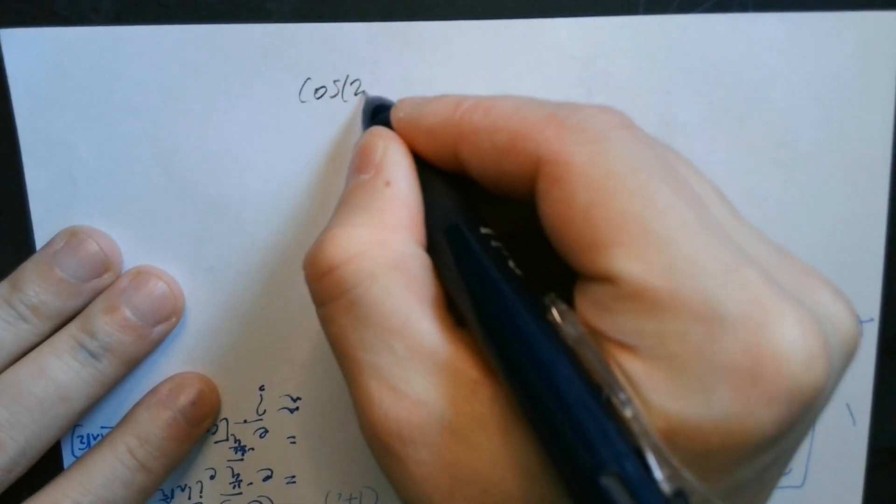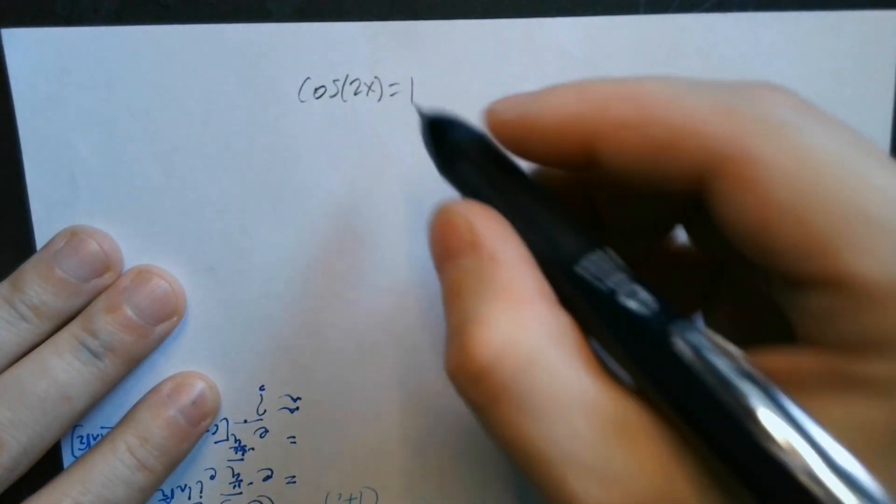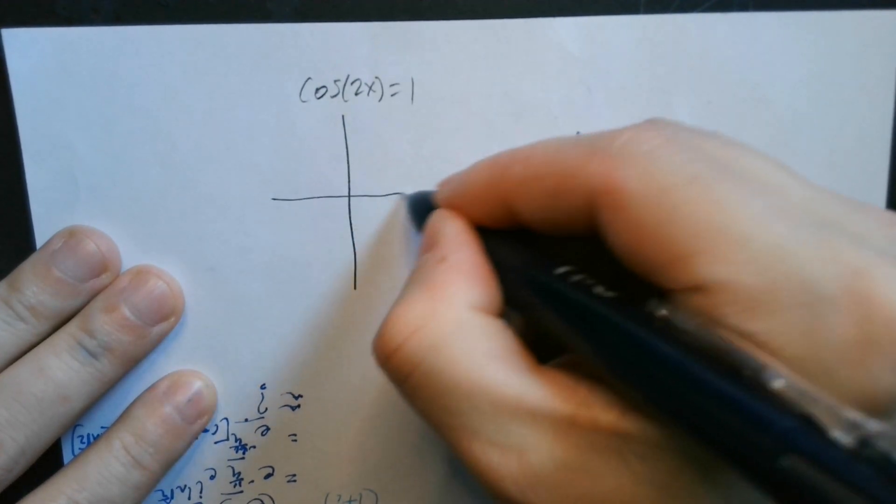Hi guys, let's solve cosine of 2x equals 1. So let's make a picture of the unit circle first.